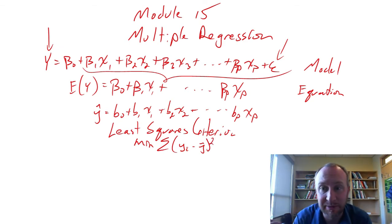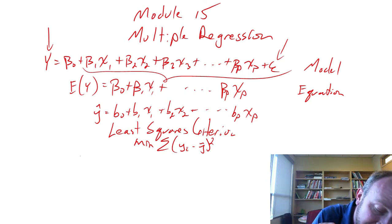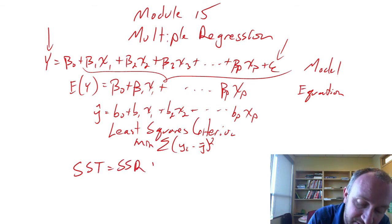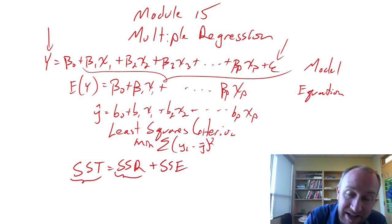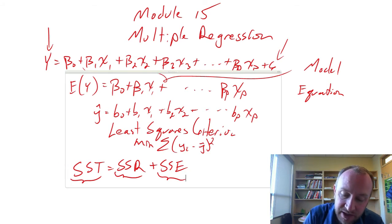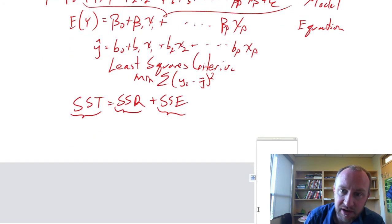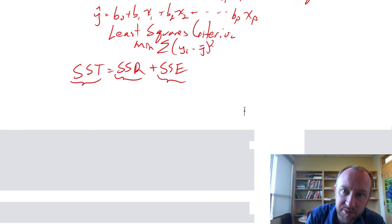Now again, same as what we looked at in the simple linear regression, basically what we're doing is we're partitioning this variation that exists in our dependent variable. We're splitting it up into that which can be explained by the regression and that which is just random fluctuation, random variation in that data set. So you may have recalled, if you've seen any of the previous videos,